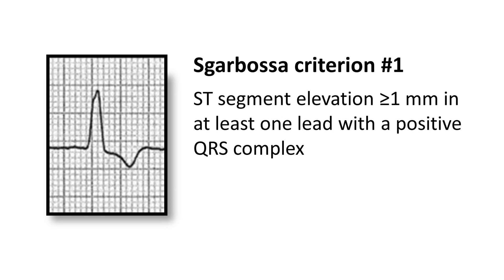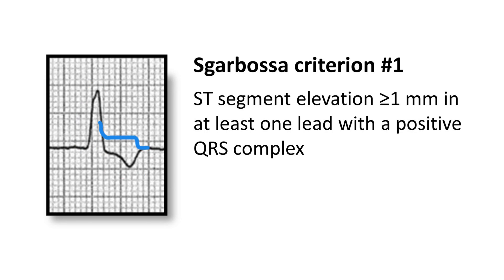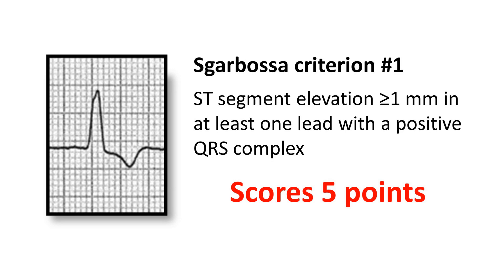There are three Sgarbossa criteria that point towards a diagnosis of myocardial infarction. The first says that if we see ST segment elevation of at least one millimetre in at least one lead with a positive QRS complex, then we should start thinking about the likelihood of an acute myocardial infarction. Normally with a positive QRS complex we see ST segment depression, so here we are looking for concordance rather than discordance between the direction of the QRS complex and the ST segment. If we see this appearance, it scores five points.